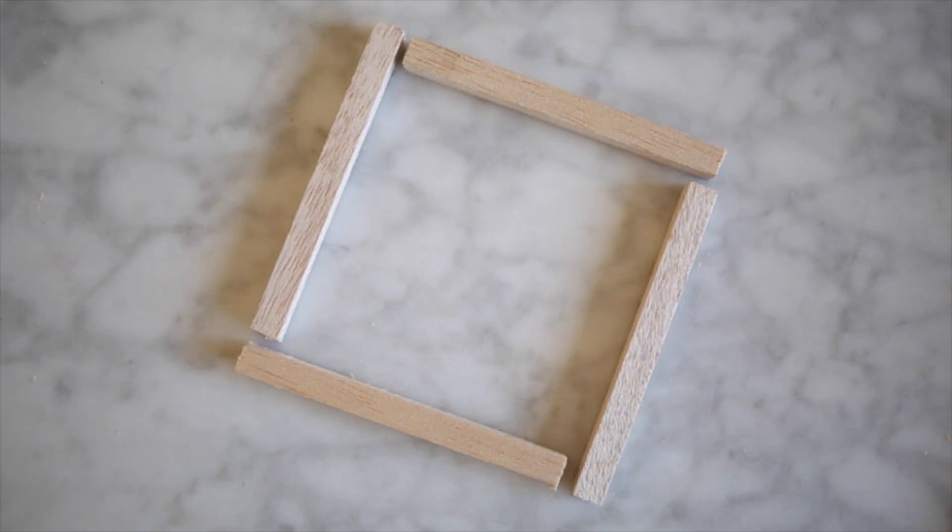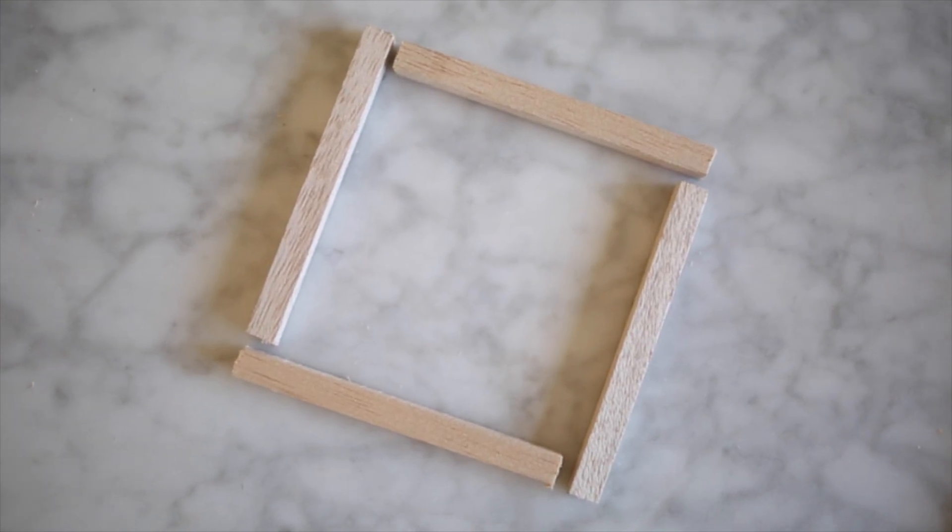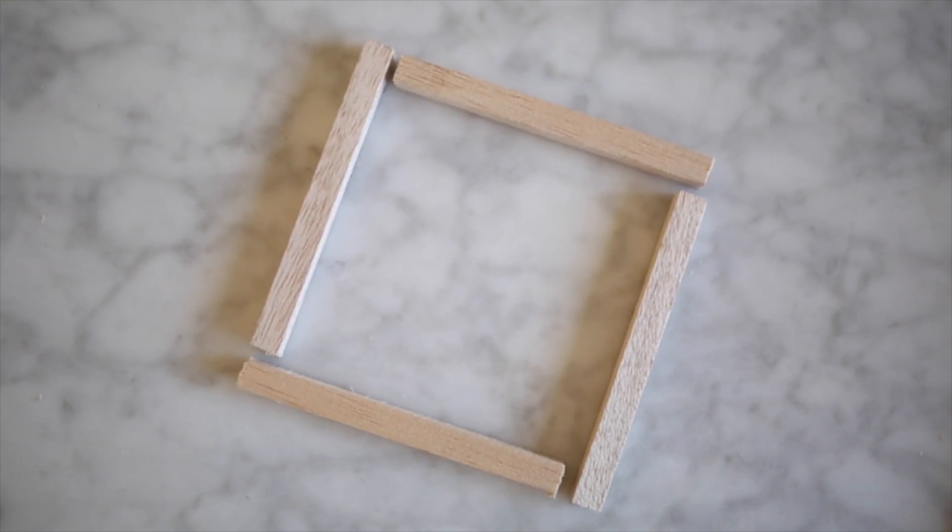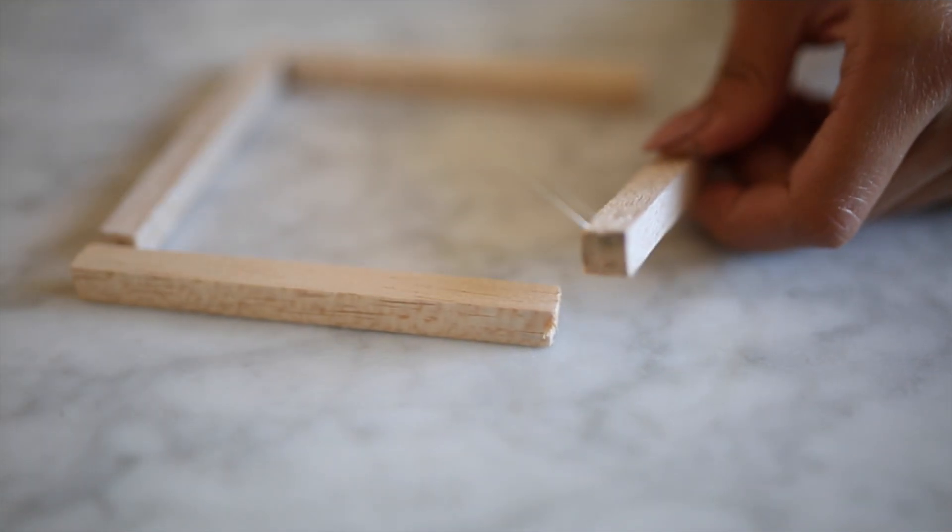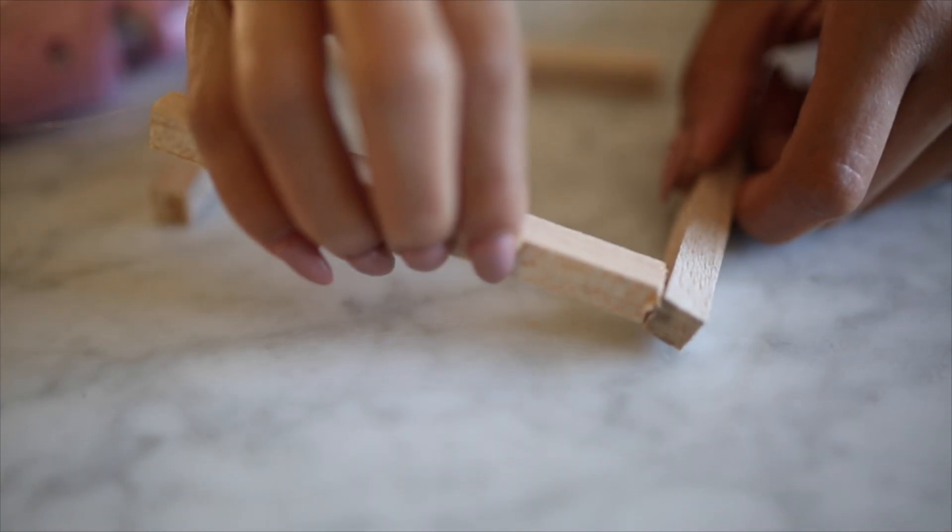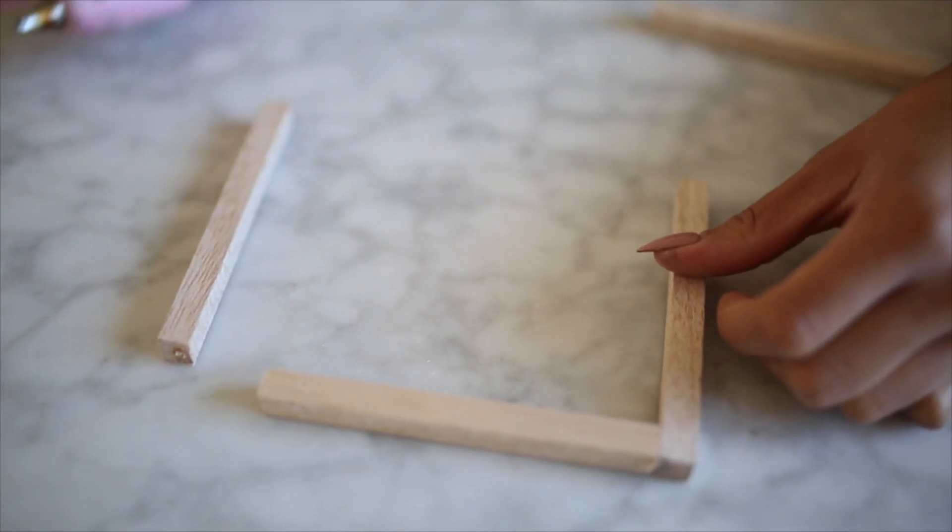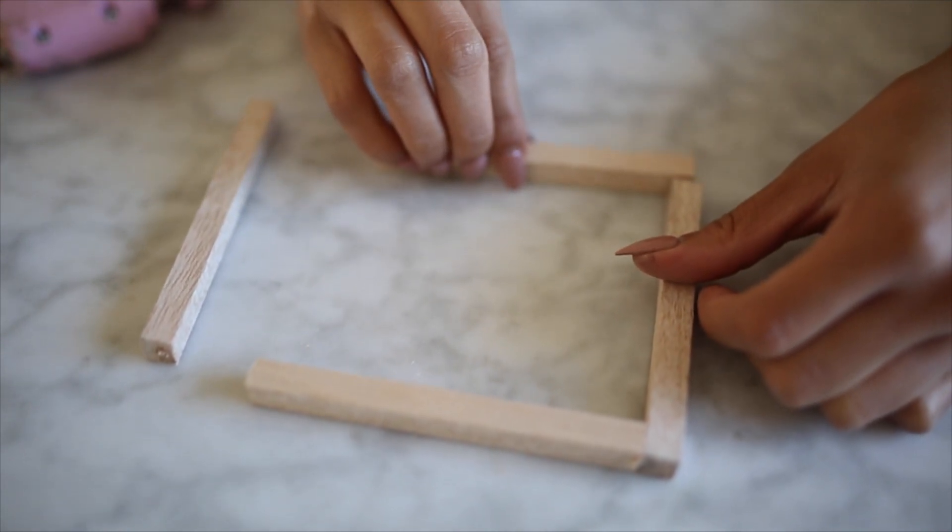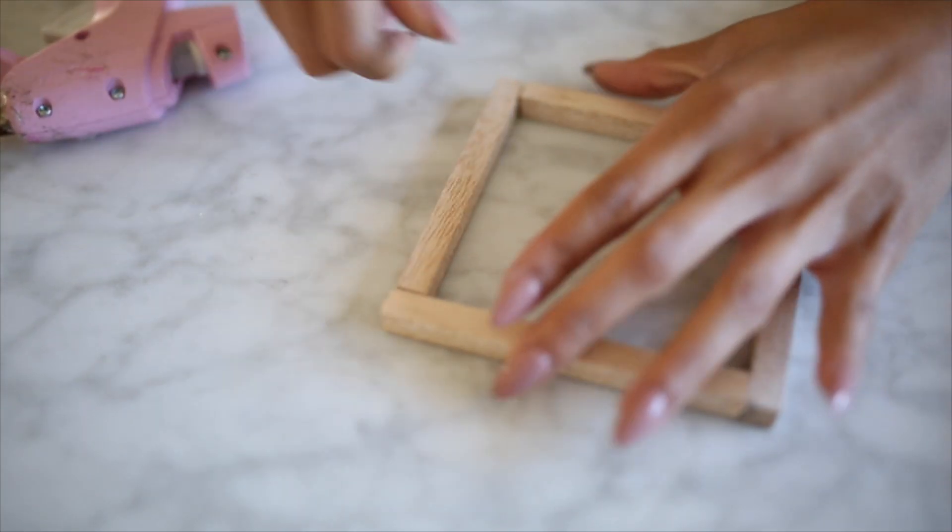So starting off, you're going to hot glue them together in this formation. You're going to need two of these little squares that you'll be making. Just take your hot glue, add a little dollop. Be very careful with this. You want it to be nice and precise or else the plant will not stand up. So yeah, you're going to make that little cube.